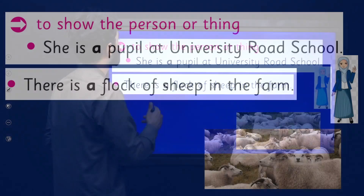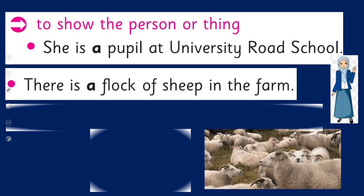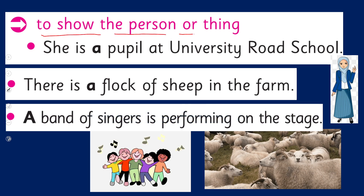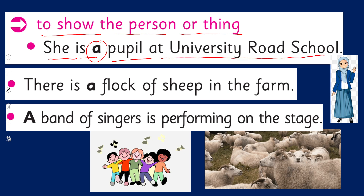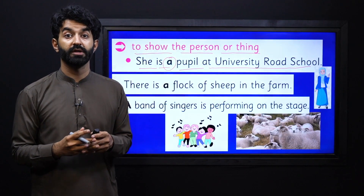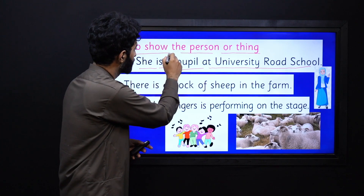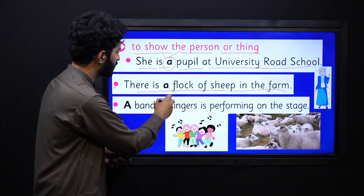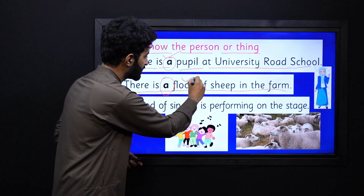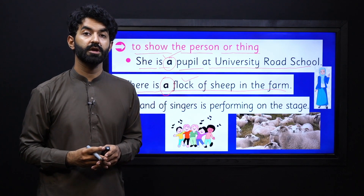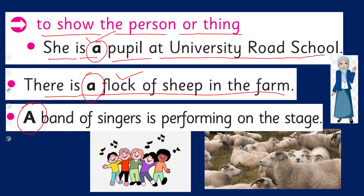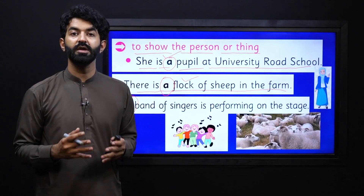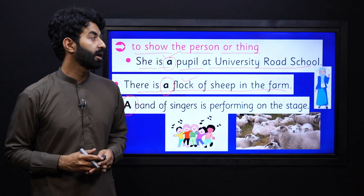We also use a to say what someone is — to show the person or a thing. 'She is a pupil at University Road School' — we are showing a person and using a before it. We are using this article before describing the person. 'There is a flock of sheep in the farm' — we are describing this thing, the group, so that's why we are using a before it. 'A band of singers is performing on the stage.' This is how we use a before a person or any thing.